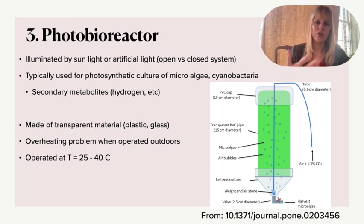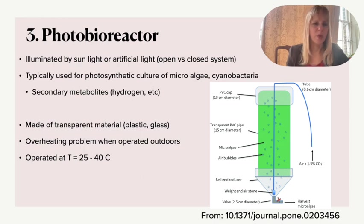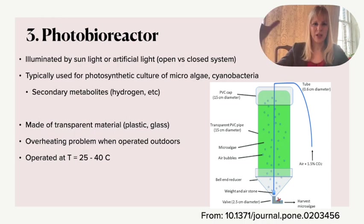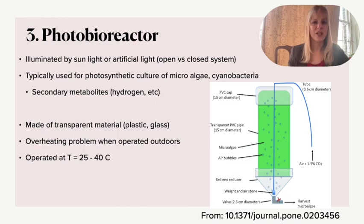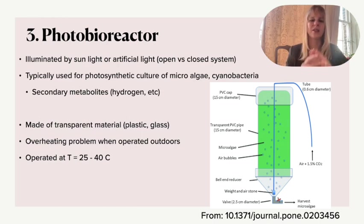A closed system comes with additional investment, additional costs, and is harder to control. They should normally be operated at relatively low temperatures of 25 to 40 degrees. If placed outdoors they act like solar panels, catching a lot of light because they are transparent, which means overheating can be a big problem and the cooling system has to be very carefully considered. They can come in lots of different design types — tubular, or even a Christmas-tree-like shape.